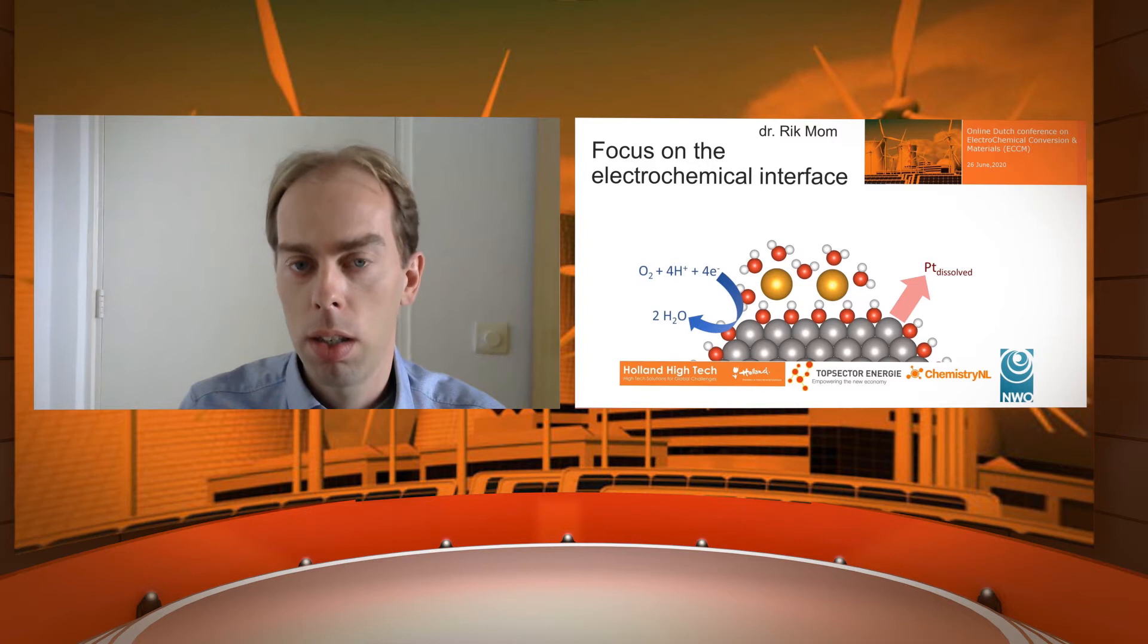Like for most electrocatalytic devices, the chemistry in fuel cells and electrolyzers is centered around the one or two nanometers around the electrode surface. This is where catalysis happens. This is where electrodegradation happens.